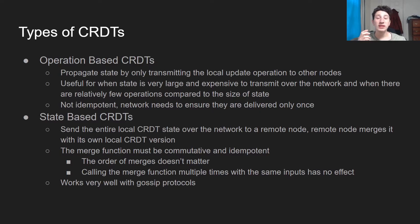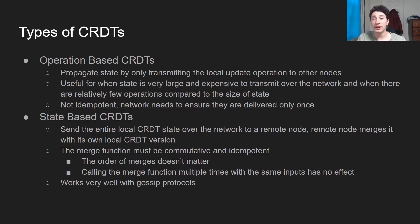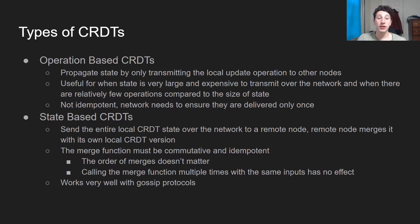If the network duplicates the fact that a client tried to increment a counter, one database node might receive two increments when another thinks there was only one. So it's important to make sure these are deduplicated, which you can do via something like TCP, or by including an extra key that ensures idempotency. Operation-based CRDTs are really good compared to state-based when the state we're transmitting is very large and expensive to send over the network, especially if there are very few operations relative to the size of the CRDT itself.